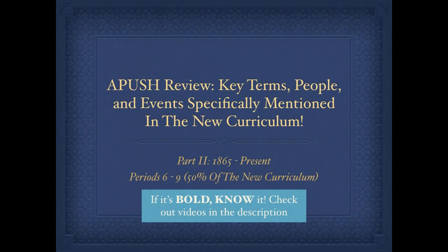What is going on APUSH people? We have part two of the final exam review. This one is going from 1865 to the present. I'm covering periods 6-9 — that's 50% of the new curriculum. I'm going to focus on key terms, people, and events specifically mentioned in the new curriculum. As you watch this video, if it is bold, make sure you know it. The chances of seeing it are pretty darn good.